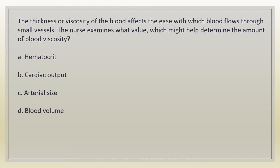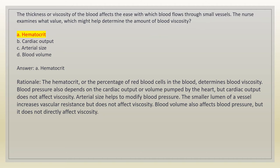The thickness or viscosity of the blood affects the ease with which blood flows through small vessels. The nurse examines what value which might help determine the amount of blood viscosity? A. Hematocrit. B. Cardiac output. C. Arterial size. D. Blood volume. Answer: A. Hematocrit. Rationale: the hematocrit, or the percentage of red blood cells in the blood, determines blood viscosity. Blood pressure also depends on cardiac output but cardiac output does not affect viscosity. Arterial size and blood volume affect blood pressure but do not directly affect viscosity.